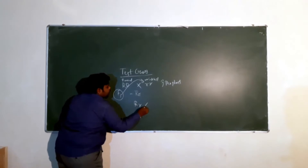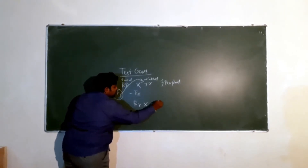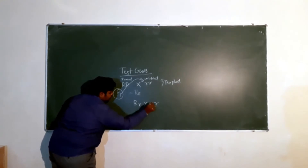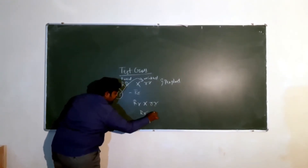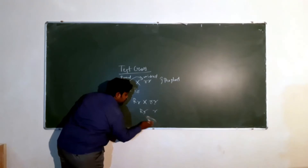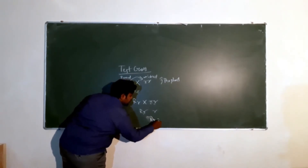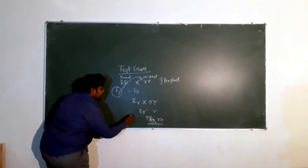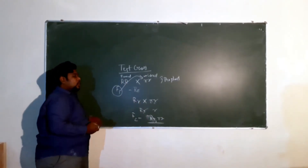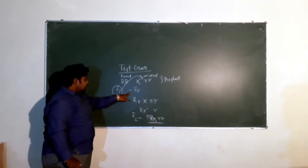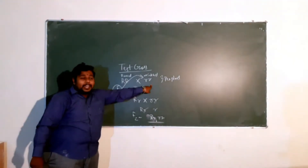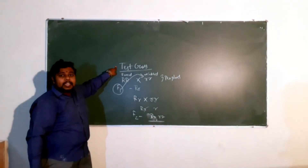So in the test cross, capital R small r is crossed with small r small r. We get the offspring: capital R small r and small r small r. So the resultant of the test cross gives us capital R small r and small r small r. A cross made between the F1 hybrid with that of a recessive parent is called as the test cross.